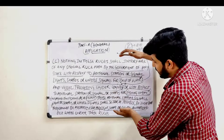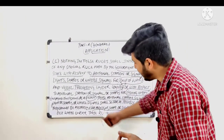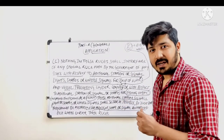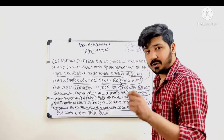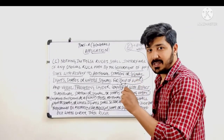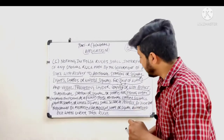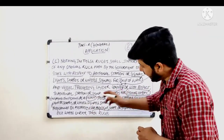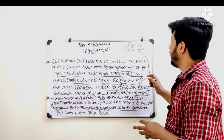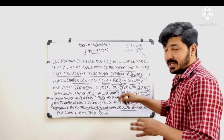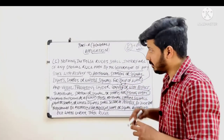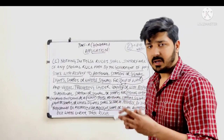Part C looks very large but has a very simple meaning. The length comes from word repetition, which is a technicality of rule-writing — every detail must be covered to prevent loopholes. But for understanding, it is very simple. Now that you know the meaning, remembering it for a long time will be easier.